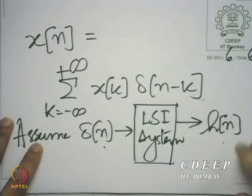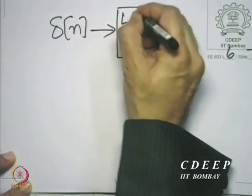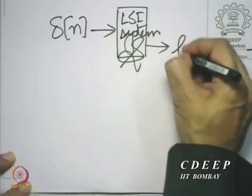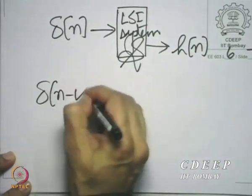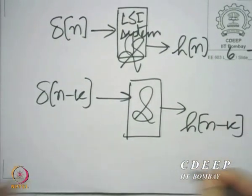We first invoke the property of shift invariance. Shift invariance tells us that if I were to give delta(n−k) for a fixed k in place of delta(n), the only result on the output would be a shift of the same k. Therefore, if delta(n) produces h(n), then delta(n−k) is going to produce h(n−k). That does half our work. Here we have invoked shift invariance.